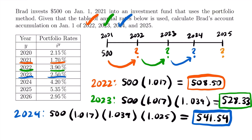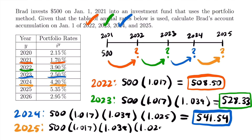Now we just need the accumulation at the beginning of 2025. It's the same calculation—we just need to multiply by another accumulation factor using the portfolio rate for 2024 to take our investment from 2024 to 2025. That portfolio rate, from our table, is 4.2%. So the accumulated value at the beginning of 2025 will be $500 times 1.017 times 1.039 times 1.025 times 1.042.